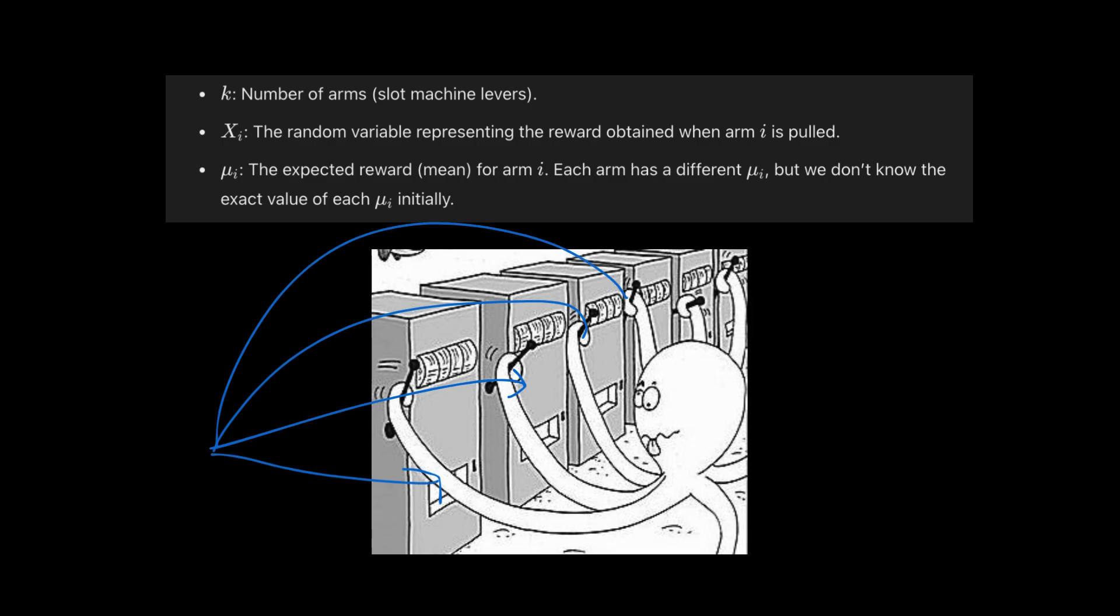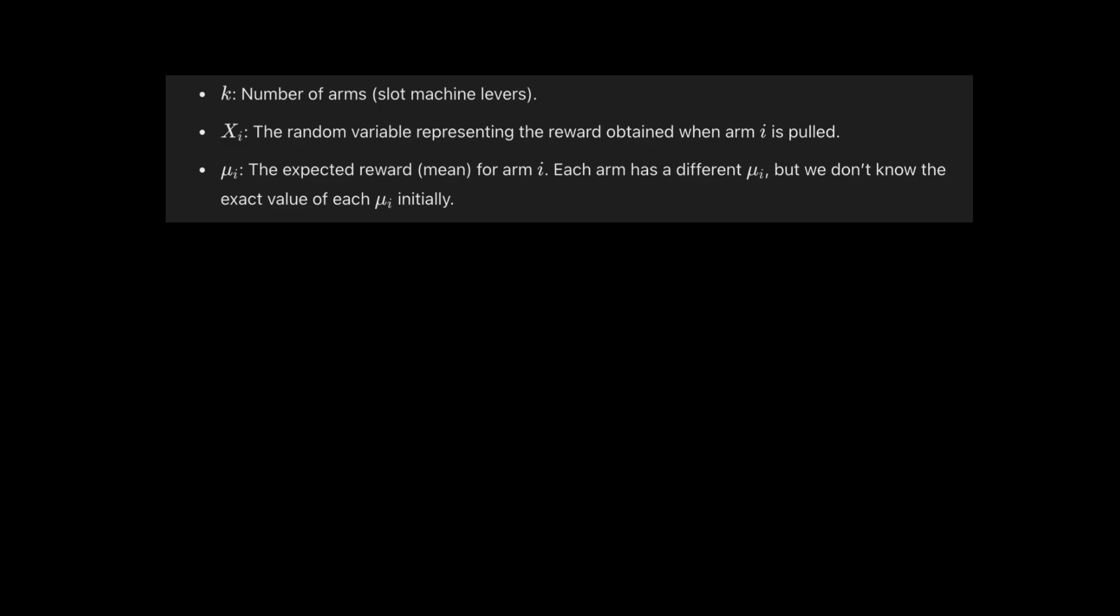Continuing on our slot machine example, imagine you are facing a slot machine with K arms. Each arm has an unknown probability distribution for the rewards. The MAB model has random variables with unknown means and variances. These are some of the variables like K, which is the number of arms, X_i is the random variable representing the reward obtained when arm i is pulled, and μ_i is the expected reward or mean reward for arm i.